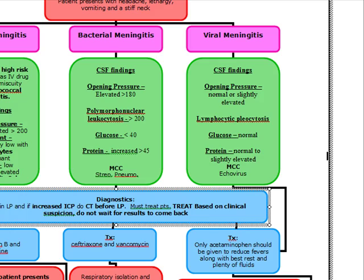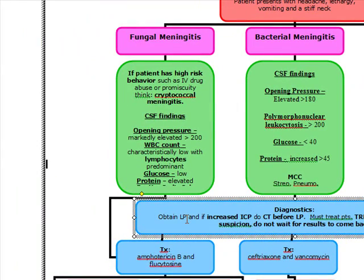To diagnose meningitis, we do a lumbar puncture first, and we do not wait for those results to treat — we treat empirically based on clinical suspicion. The only time we don't do a lumbar puncture first is when the patient has increased intracranial pressure, which presents with papilledema. In that case, we do a CT first, but we still treat empirically without waiting for CT results.